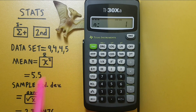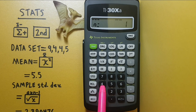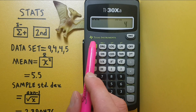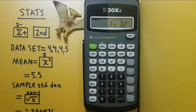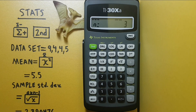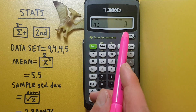Next we have two fours. If you have multiple of the same number you can enter them all at the same time by placing the number on the stack, and then pressing the second function frequency button, and entering the number of times this number is in your data set. Since we have two fours we press 2, then the sigma plus key. You now see we have three numbers in our data set.